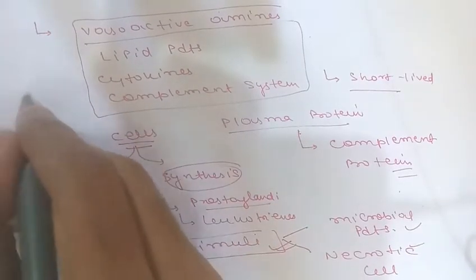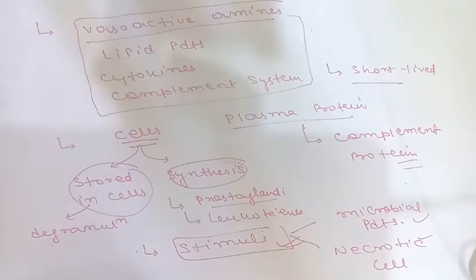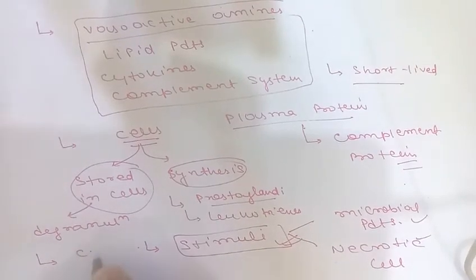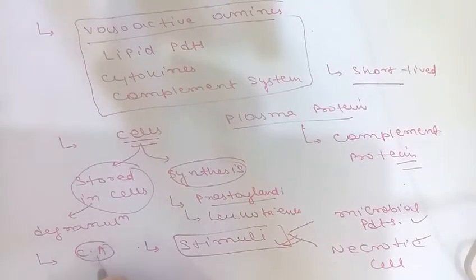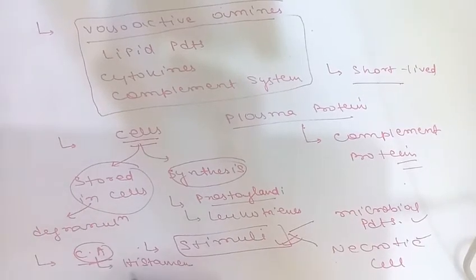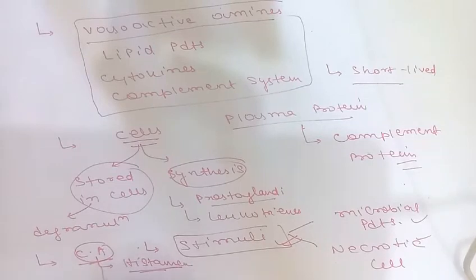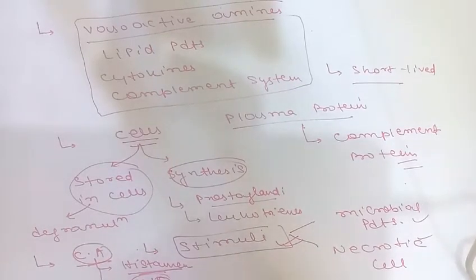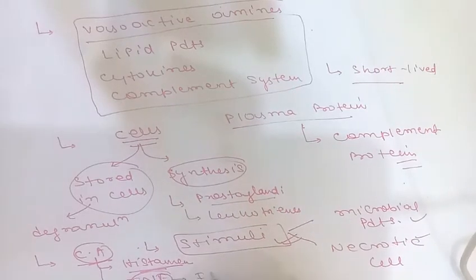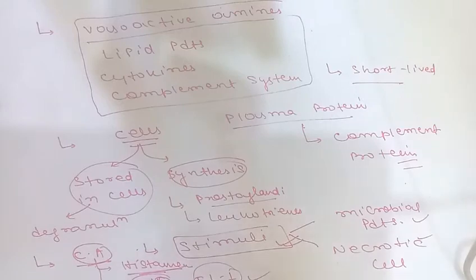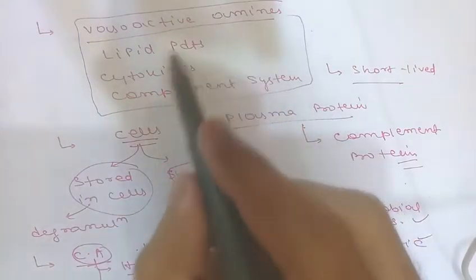One mediator can stimulate the release of other mediators. For example, products of complement activation stimulate the release of histamine. Similarly, the cytokine TNF (tumor necrosis factor) can stimulate the production of another cytokine, IL-1 (interleukin-1). So one mediator can trigger the release of another.